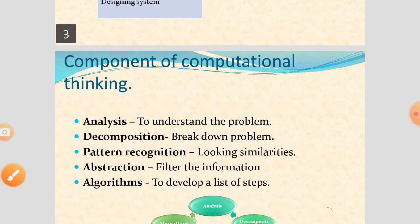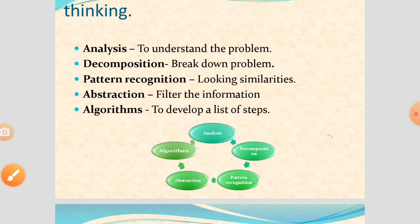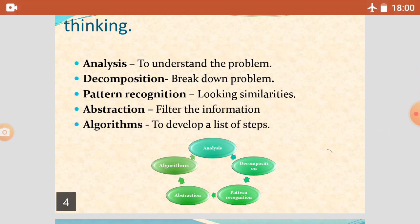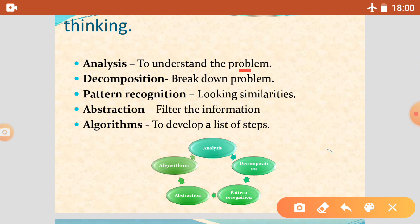Let's understand the components of computational thinking. How does a scientist work? How does a computer work? Firstly, the computer tries to understand the problem and tries to make a goal. These things are done in analysis.